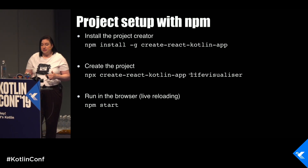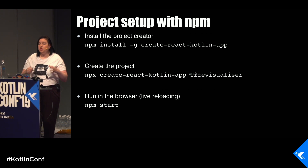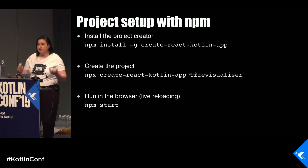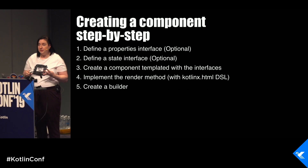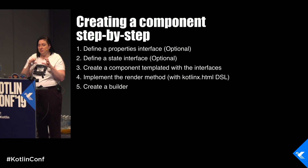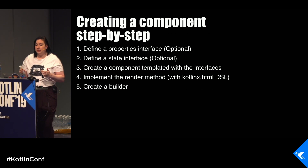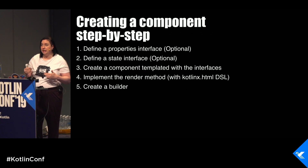To set up the project, you use some NPM modules — first install the project creator, then use it to create your project. We use NPM start, which runs the project in the browser with live reloading. To create a component in Kotlin/React, we need to do five things: define a properties interface for what we pass from parent to child; define a state interface for all internal state; create the component templated with those two interfaces; create a compulsory render method using the KotlinX.html DSL; and lastly create a builder so it's quick for a parent component to use.